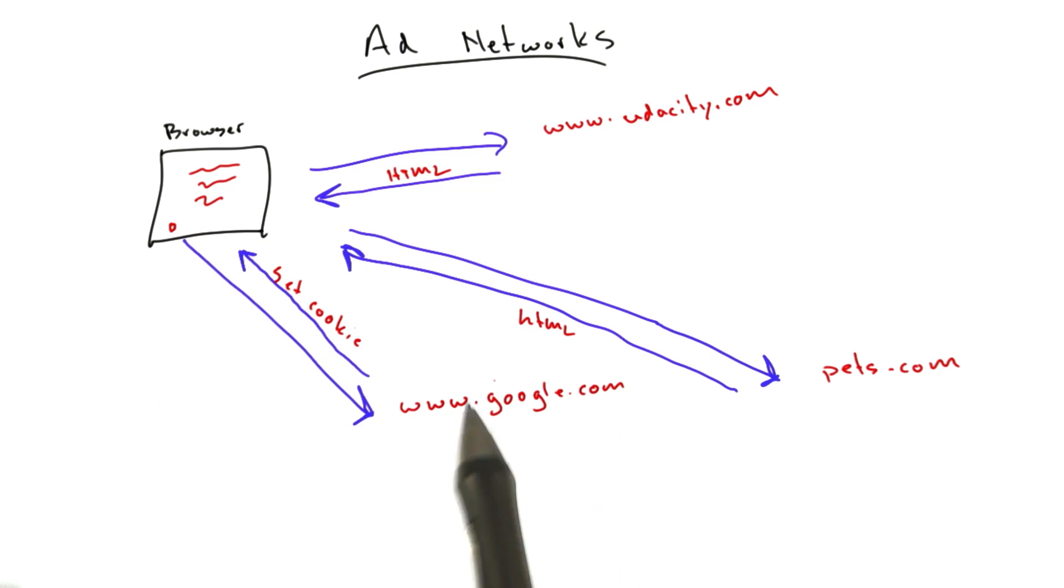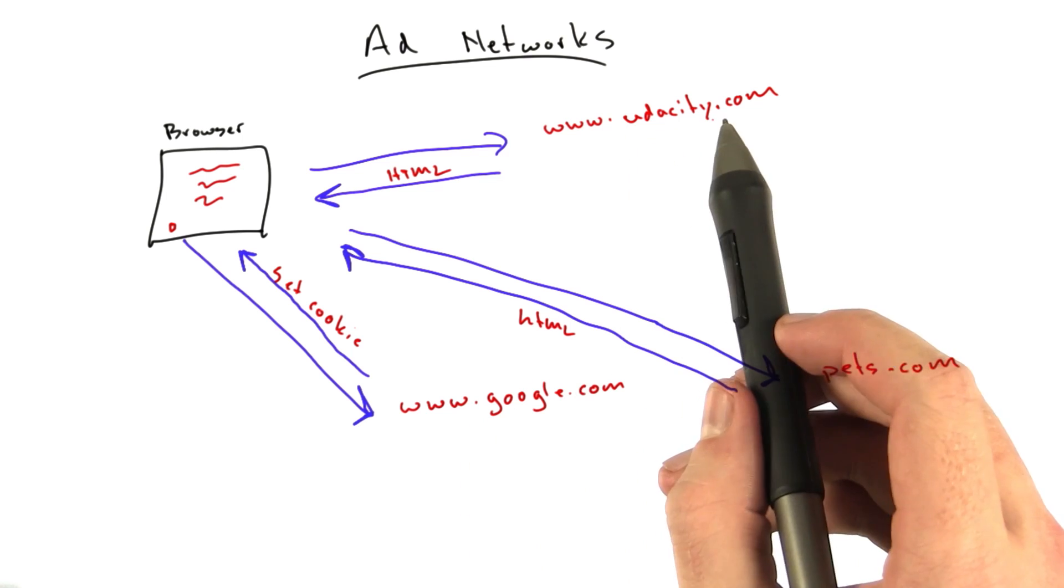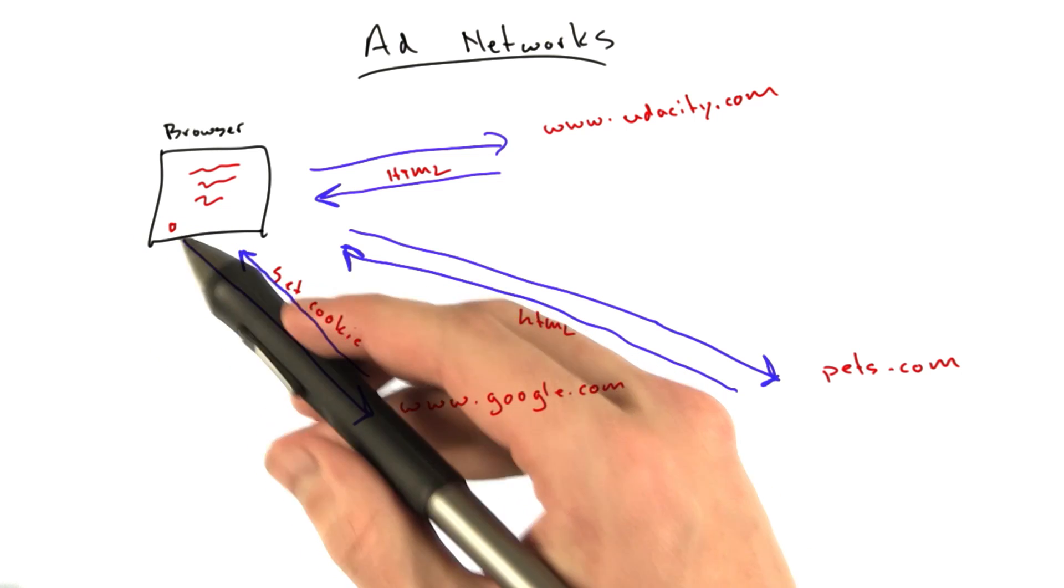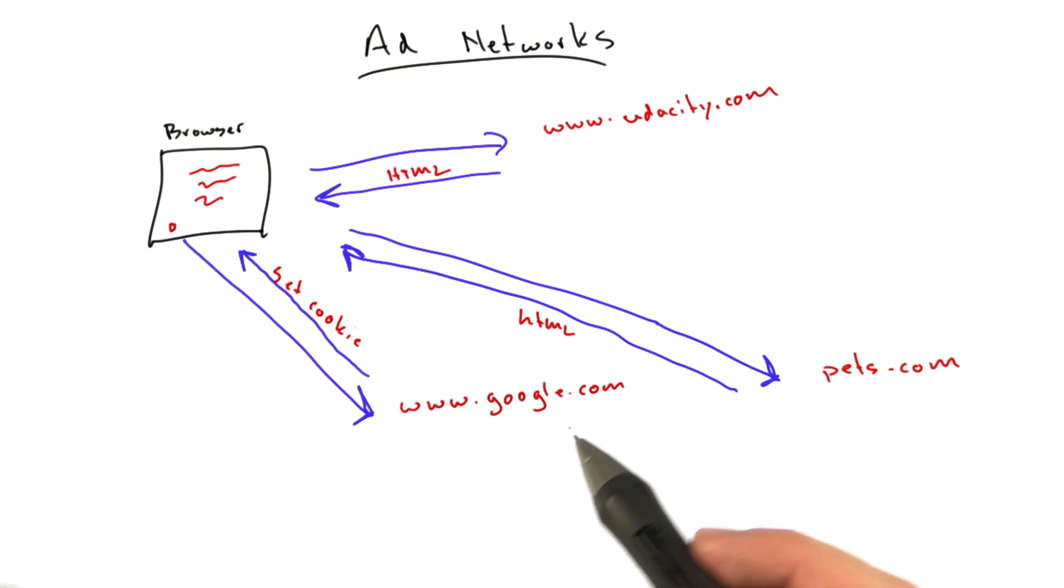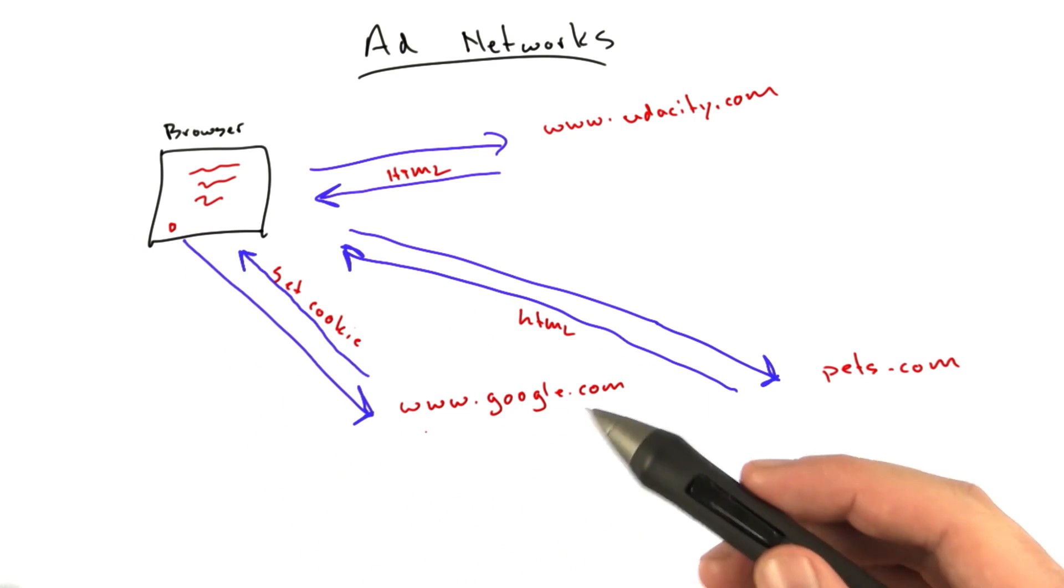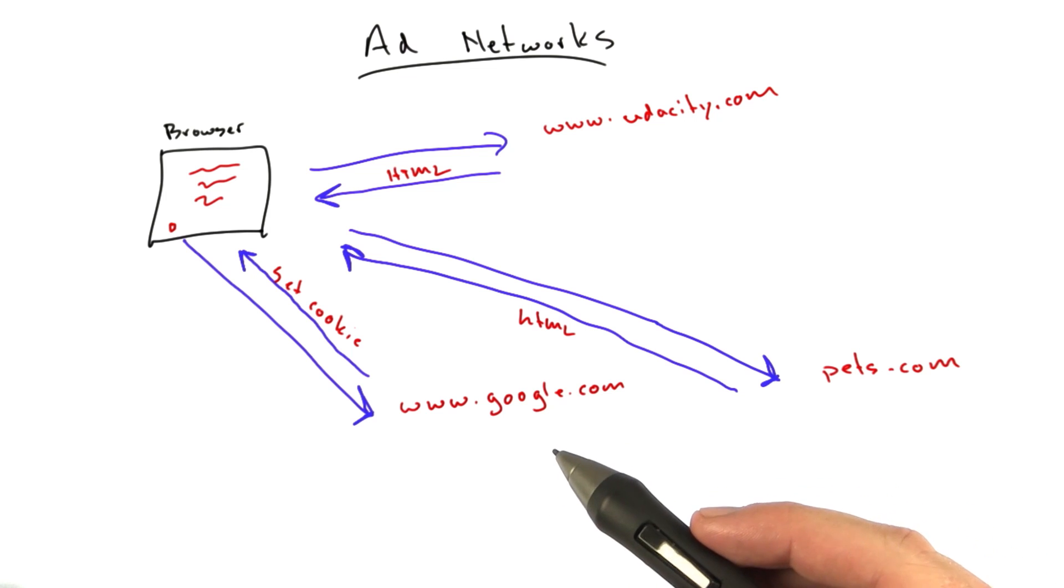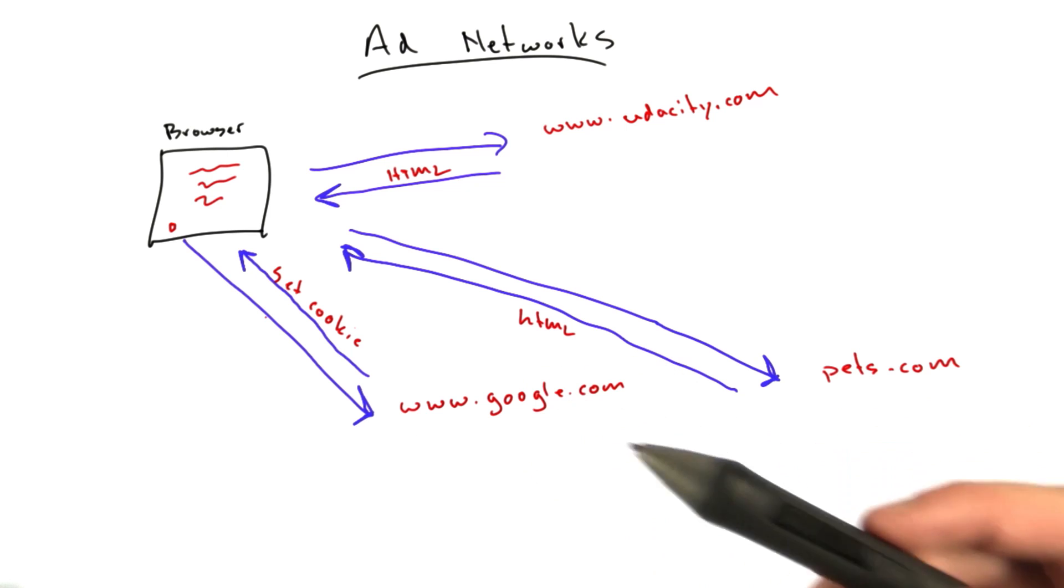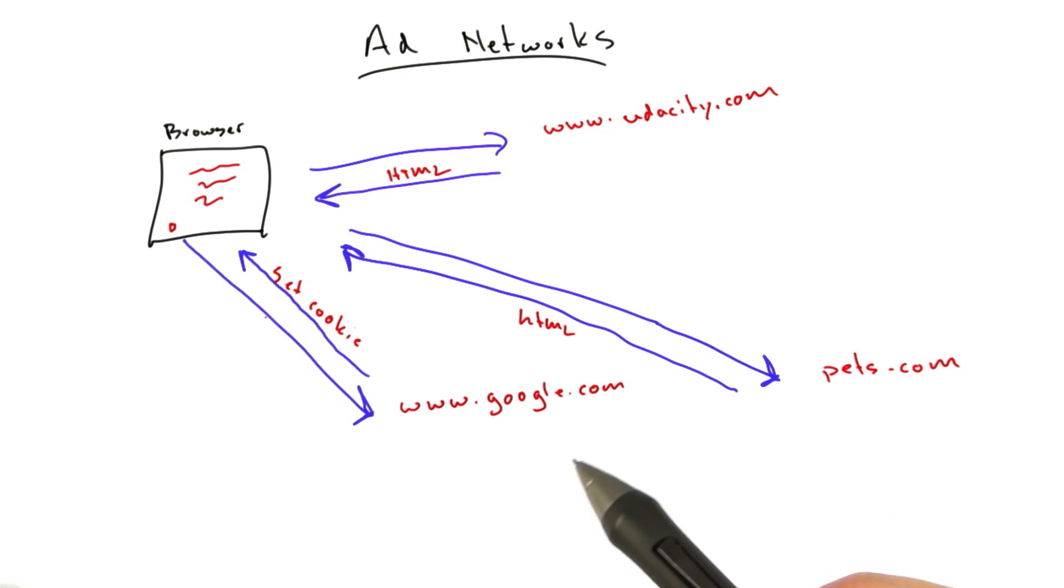All of a sudden Google knows, hey, you've been to Udacity.com and pets.com, because they're like a common third party here. And Google actually has, between Google Analytics and AdSense and that sort of thing, they actually have pixels and a presence on a huge percentage of webpages. They have one of the largest ad networks.